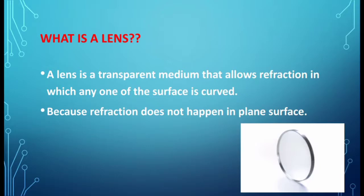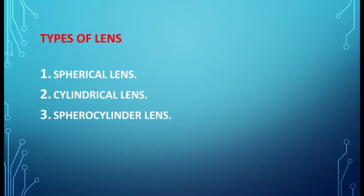A lens is a transparent medium that allows refraction. Refraction means bending of light rays, in which any one of the surfaces is curved, because refraction only occurs in a curved surface — it does not occur in a plain surface. That's why in a lens, any one of the surfaces should be curved, so that light rays enter through the lens.